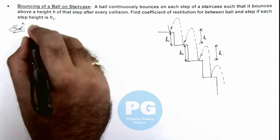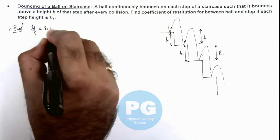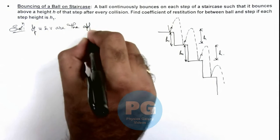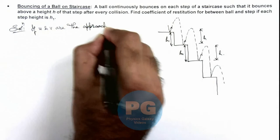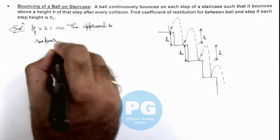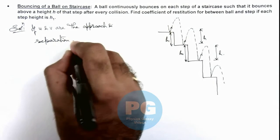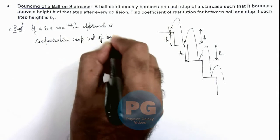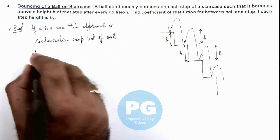Here we can see if u and v are the approach and separation velocities of ball at collision.